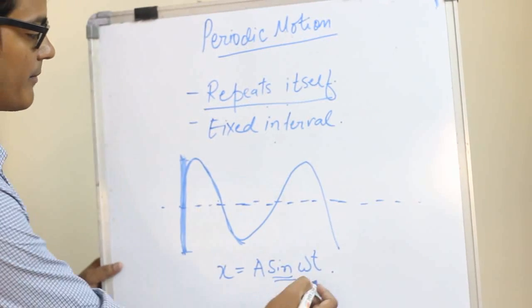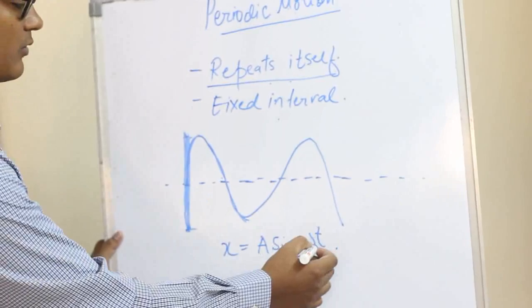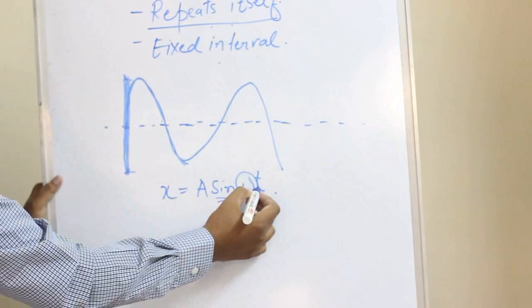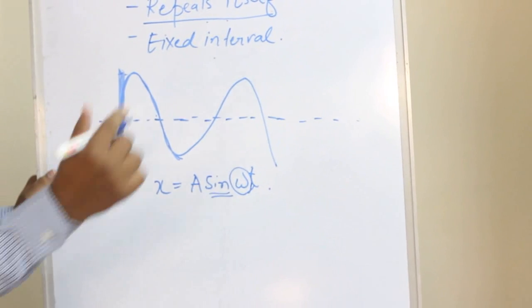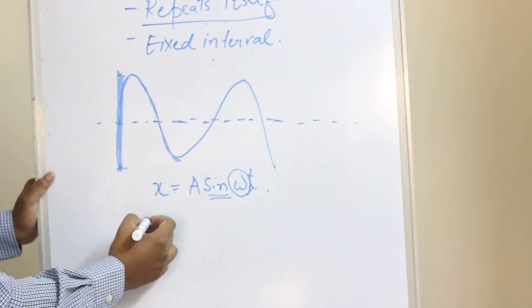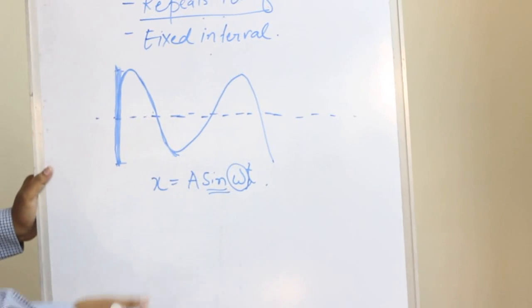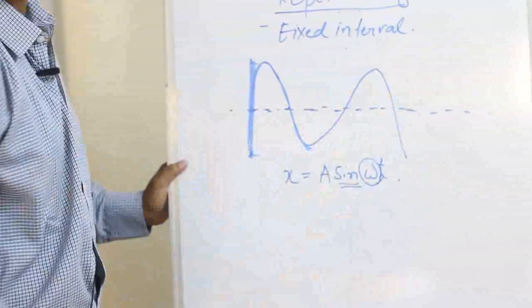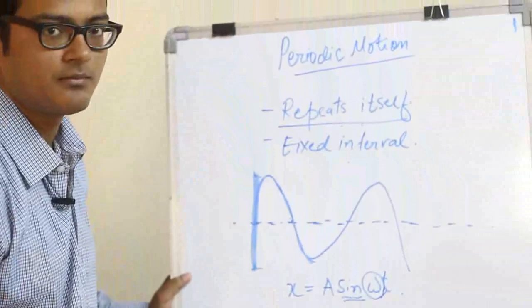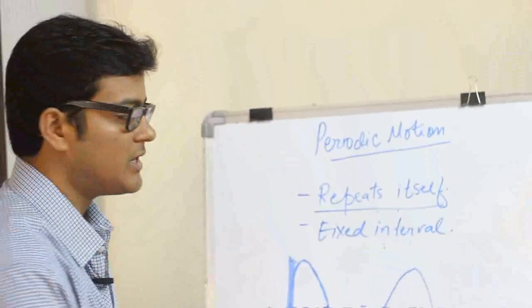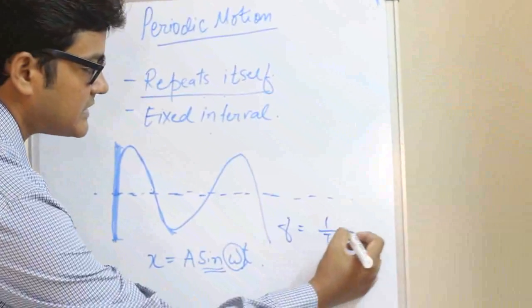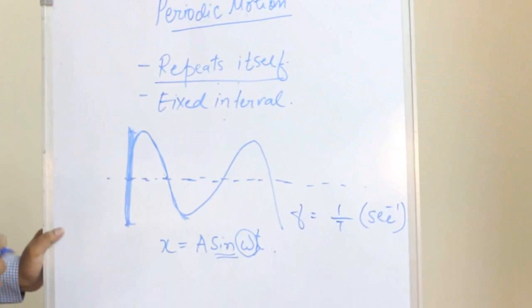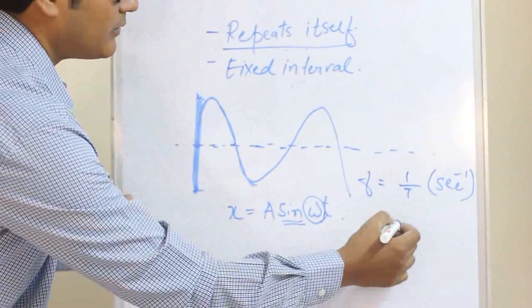Now let's see what is omega. Omega is the angular frequency. Let's see what is angular frequency. First, let's see frequency. Frequency is the number of waves passing a point per unit time. That is the definition of frequency. Its unit is obviously 1 upon T, so per second is the unit of frequency.